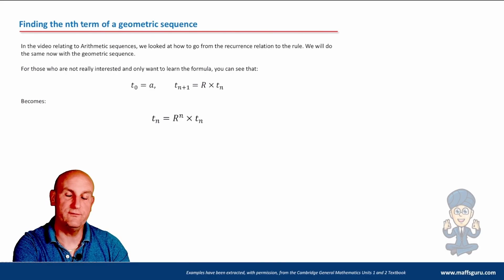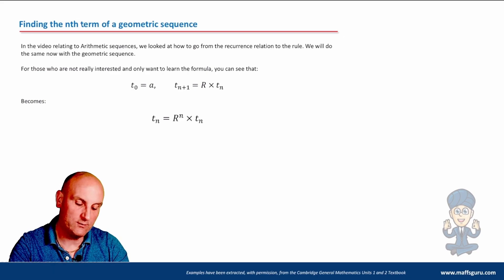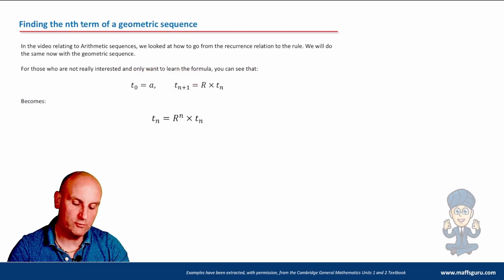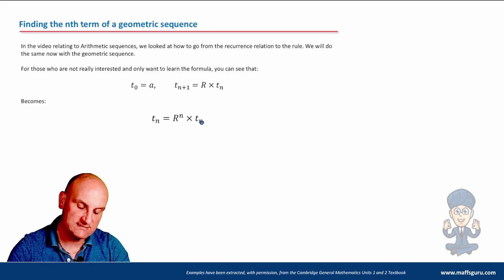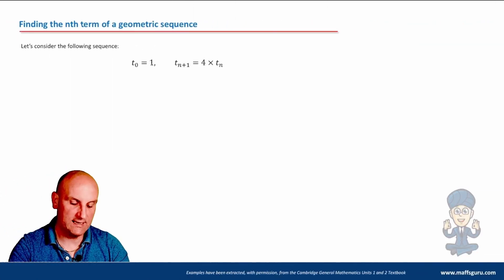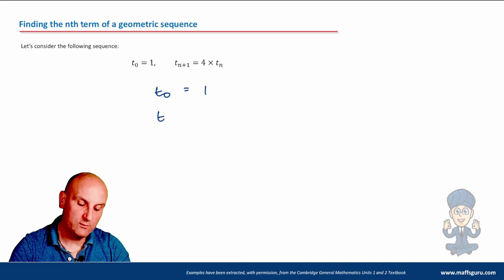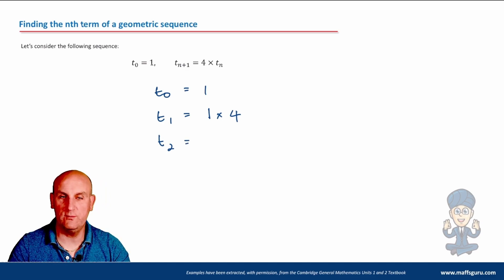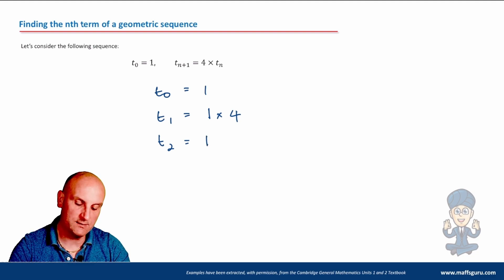Now let's find the nth term of a geometric sequence. We're going to convert a recurrence relation — which has a T₀ and a T_{n+1} rule — into a direct formula. The nth term is given by T₀ times r to the power of n. Let's work it out with a simple example: T₀ = 1, and each term is multiplied by 4. So T₁ = 1 × 4.